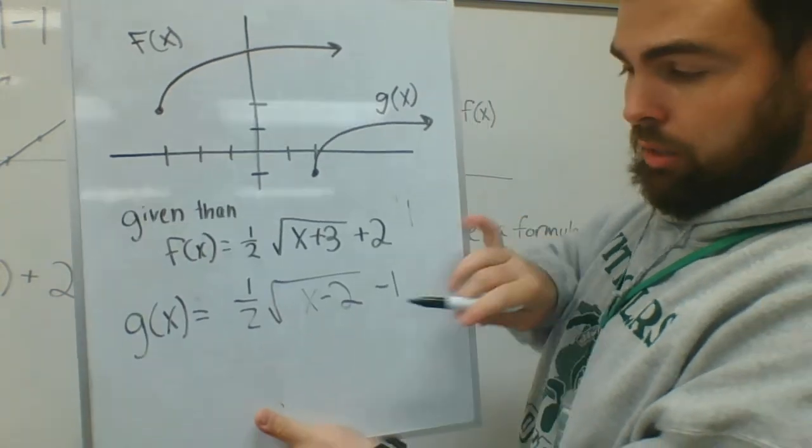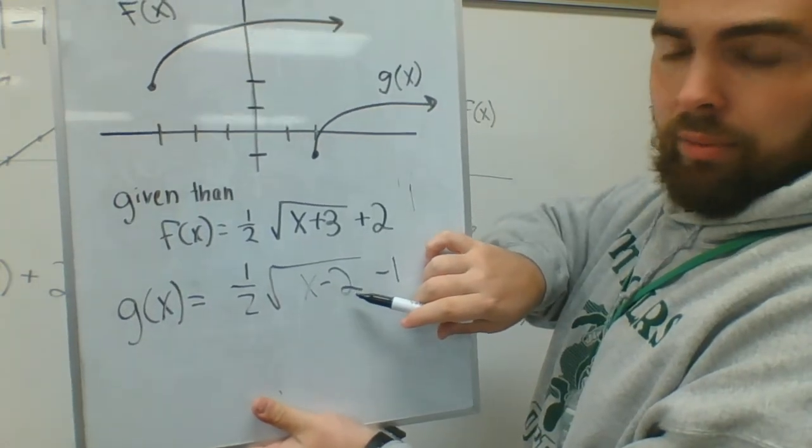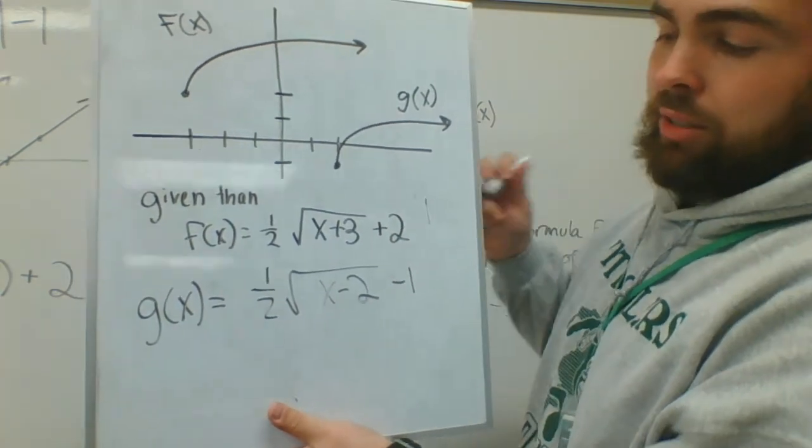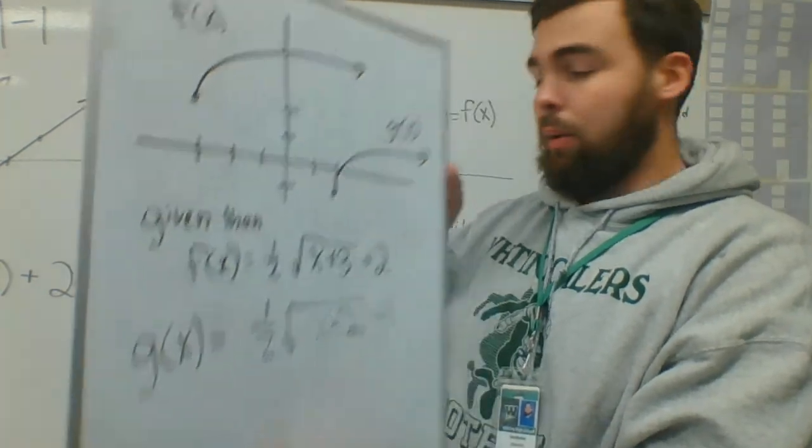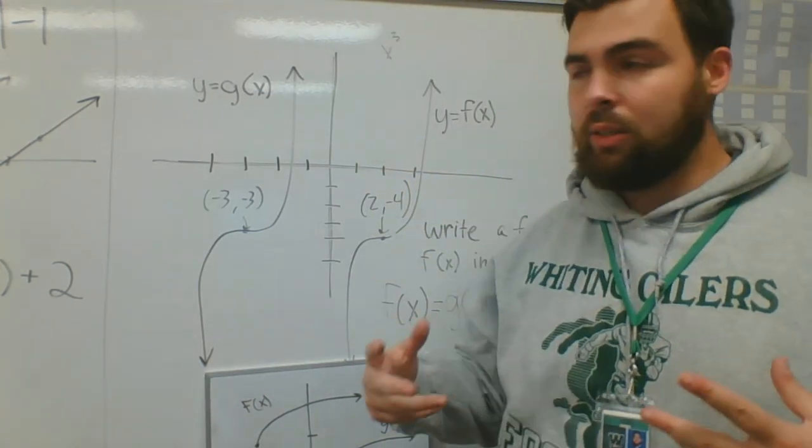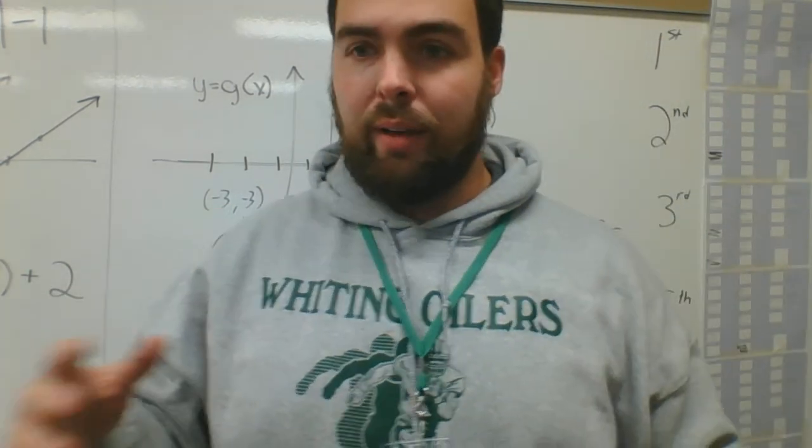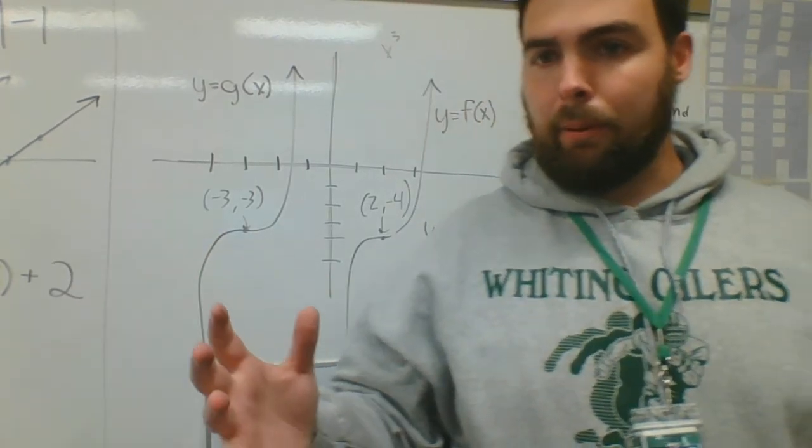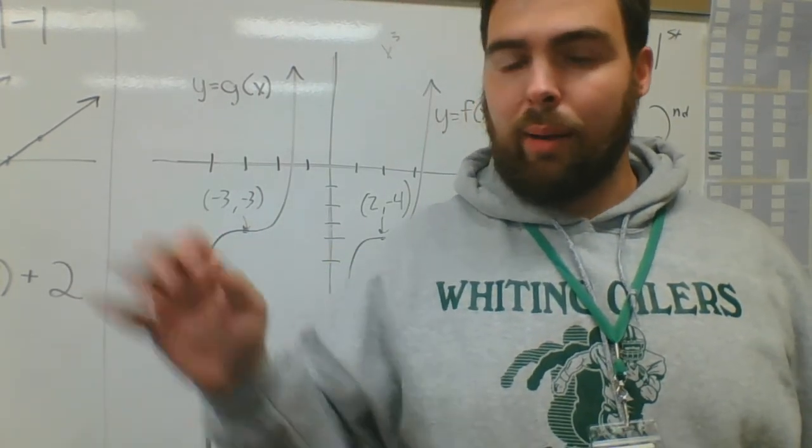And then it goes down 1 instead of up 2, so minus 1. It's important that you remember to change the sign. If I'm going right it's going to be x minus 2, so that'll be your answer. I'm sure there'll be a lot of questions in this section because it starts to ramp up in terms of difficulty, so whatever questions you have make sure you email me and we can sort out whatever problems we're having.